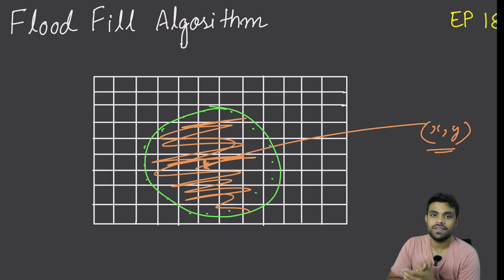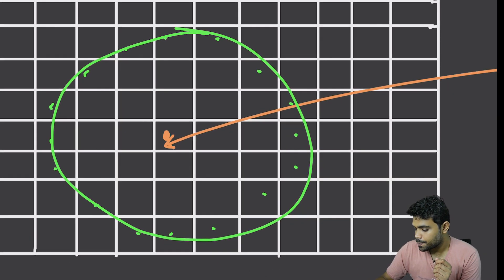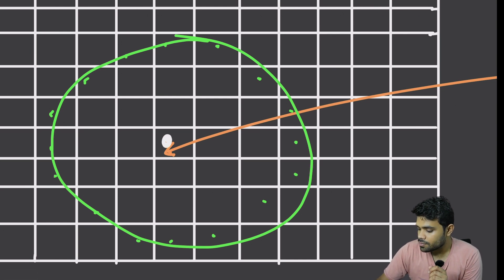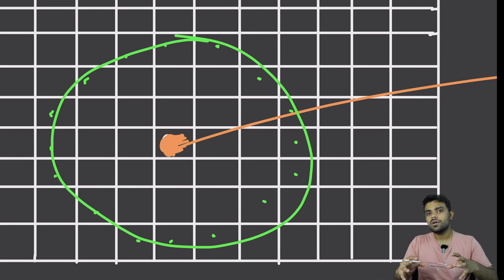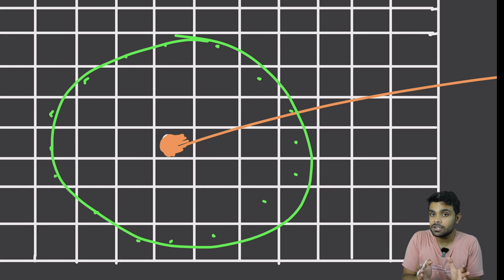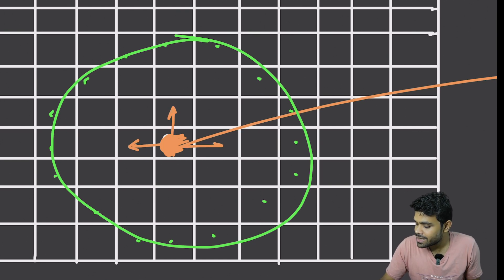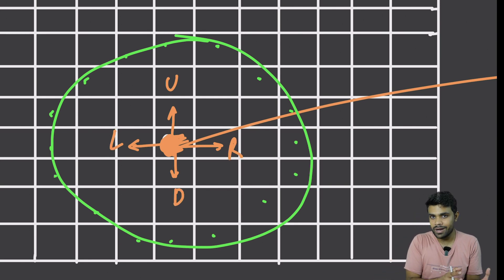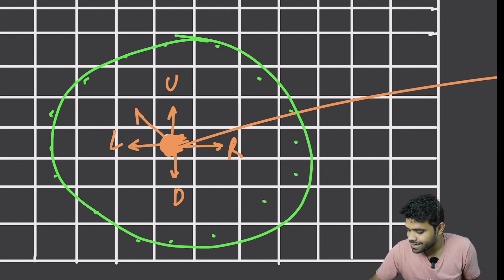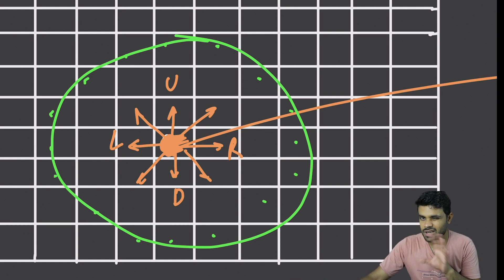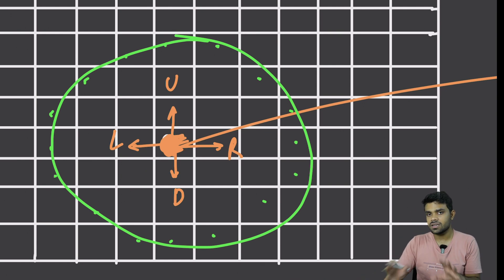How will it happen? It will happen with the help of recursion. We are going to start from this particular cell and color it with this peach color. After coloring it, I will ask recursion to handle the rest of the task — basically to spread this color in the rest of the region. The rest of the region means going up, down, right, and left — all four directions. Sometimes we also go in the four diagonals, but for now let's just consider these four directions.